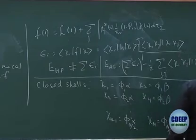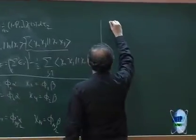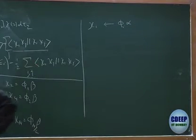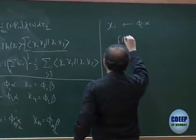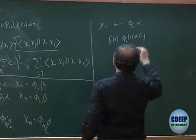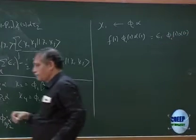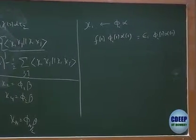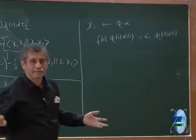We want to look at this expression and spin-integrate it. Let us assume that chi_i is phi_i alpha — this is a specific index resulting from diagonalization. So f(1) acting on phi_i(1) alpha(1) equals epsilon_i phi_i(1) alpha(1). Without loss of generality, chi_i is alpha spin; the beta spin case follows similarly.